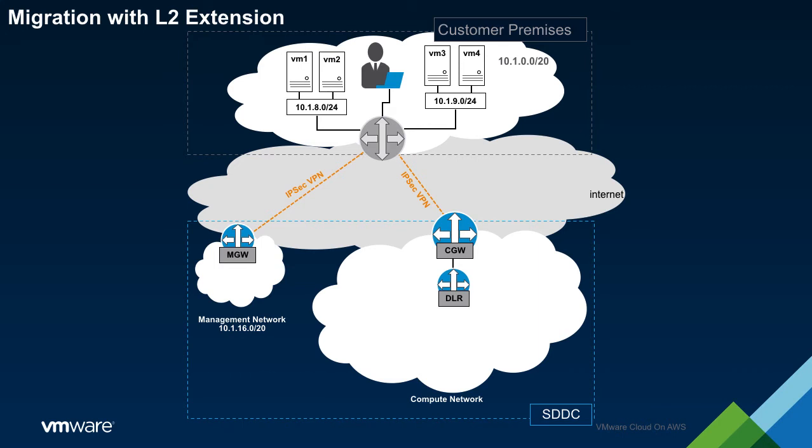HCX is a tool which has been specifically designed to facilitate workload migration and provides features such as migration scheduling, WAN optimization, and L2 network extension. HCX is free for use with VMware Cloud on AWS; however, it must be activated within the SDDC before it may be used.